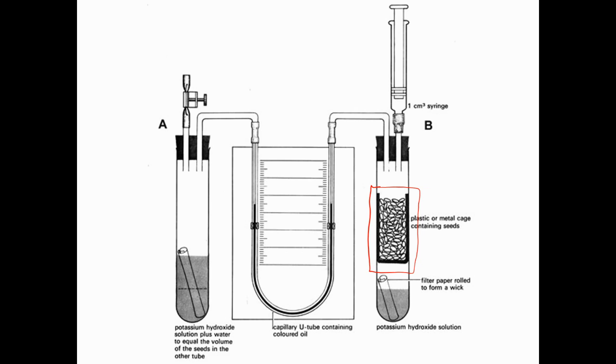The way that that is measured is by this capillary U tube in the middle, which contains coloured oil or water. What happens is as the seeds absorb oxygen, they draw oxygen in from their surrounding area. It reduces the amount of pressure in here and it draws the liquid up through the capillary U tube.